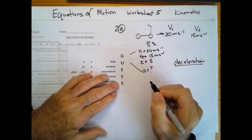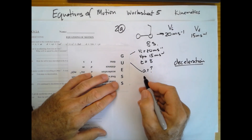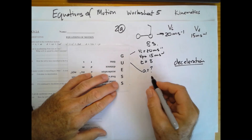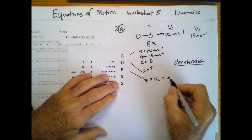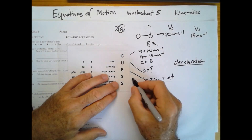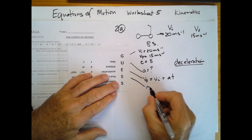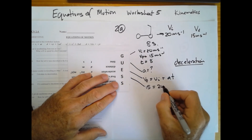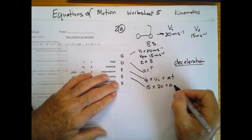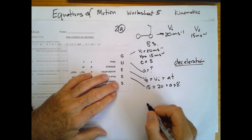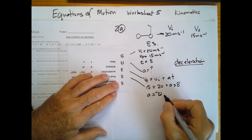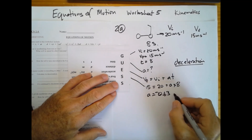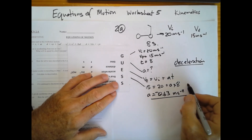We need an equation tying v-initial, v-final, a, and t together. Once again: v-final equals v-initial plus a times t. Substituting: 15 equals 20 plus a times 8. Rearranging, acceleration equals negative 0.63 meters per second squared. You can work that one out for yourself.